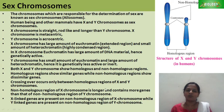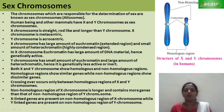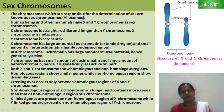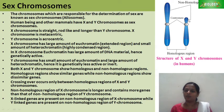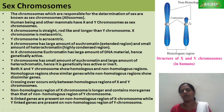The X chromosome has a large amount of euchromatin so it is genetically active, while the Y chromosome has a small amount of euchromatin and a large amount of heterochromatin, making it genetically less active or inert. Both X and Y chromosomes show homologous regions and non-homologous regions. The homologous region contains identical genes, while the non-homologous region contains dissimilar genes. Crossing over occurs only between the homologous region of X and Y chromosomes. The non-homologous region of the X chromosome is larger than that of the Y chromosome and contains more genes.